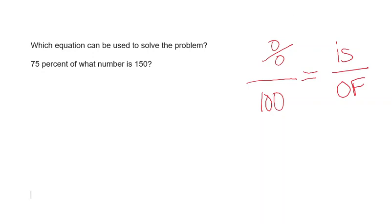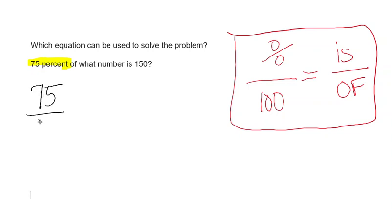So if you can remember this is how you set it up, then it's simply a matter of substituting into this formula. Here we have 75 percent, so that means we are going to do 75 out of 100 because a percent is always out of 100. We're going to use equivalent ratios to solve.